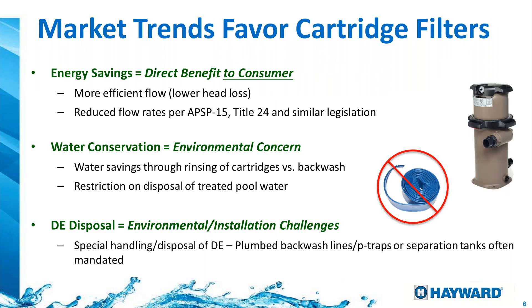A market trend we're seeing is people switching more and more into cartridge — and that is my personal favorite as well. By switching to cartridge, we get better filtration compared to sand, which is what most of us use in our markets. We also get the benefit of water conservation because we are not doing backwash, so we're not wasting treated pool water. Cartridge filters don't require backwash, so we don't lose treated water, and cleaning a cartridge with a garden hose uses far less water than a backwash cycle. Compared to DE, there's nothing to dispose of, since many countries consider DE a hazardous product.